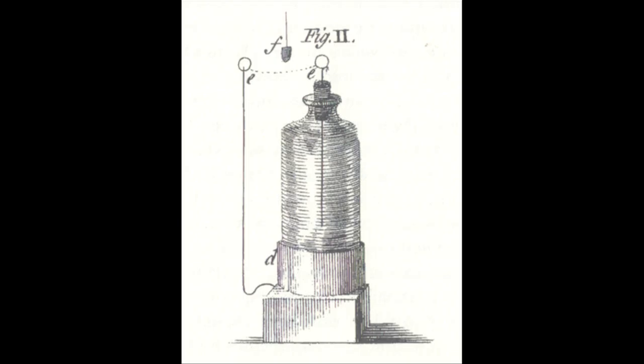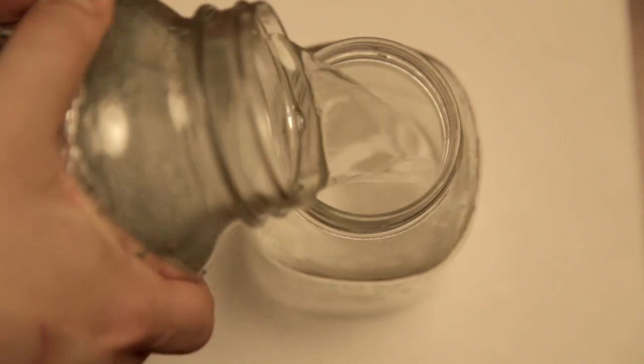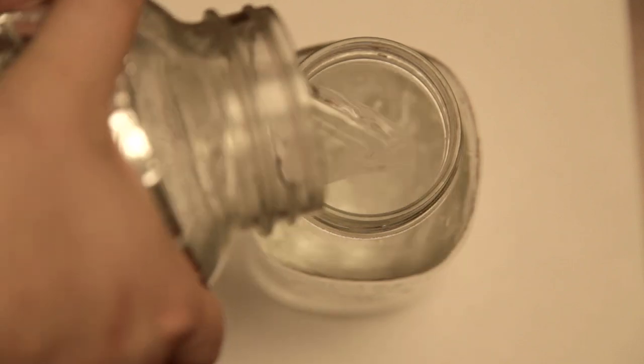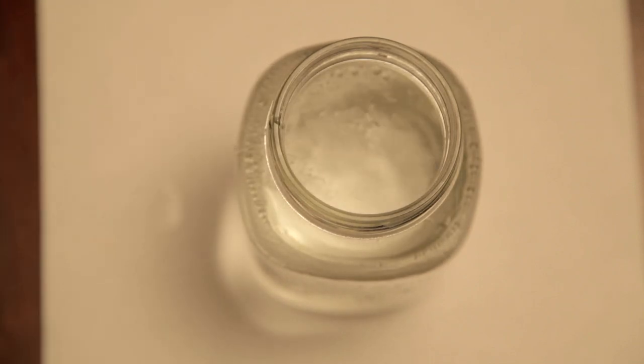Franklin improved the design over time, eventually realizing that the charge was not stored in the water, but the glass. The water was merely a conductive path from the probe to the jar. Today, we would call the Leyden jar a capacitor, or charge storing device.